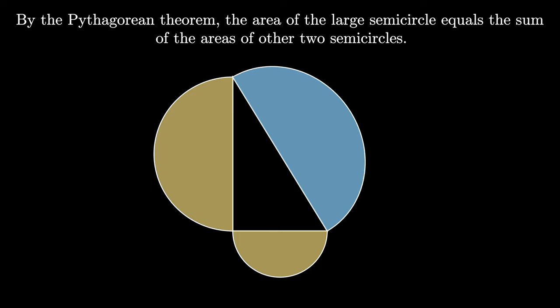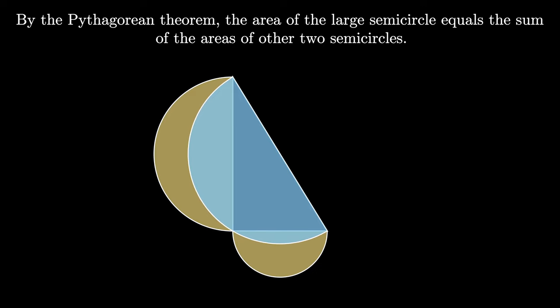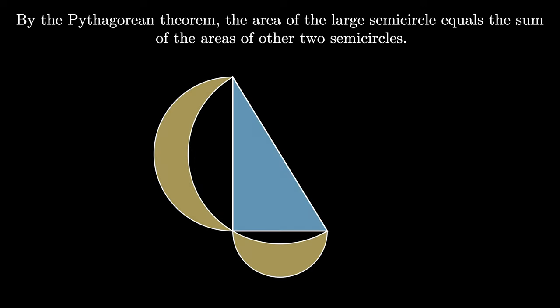Now when we reflect the semicircle on the hypotenuse about the hypotenuse and cancel the blue and yellow areas of overlap, we see that the right triangle is filled, and we've created two lunes off of the legs of the right triangle like this.